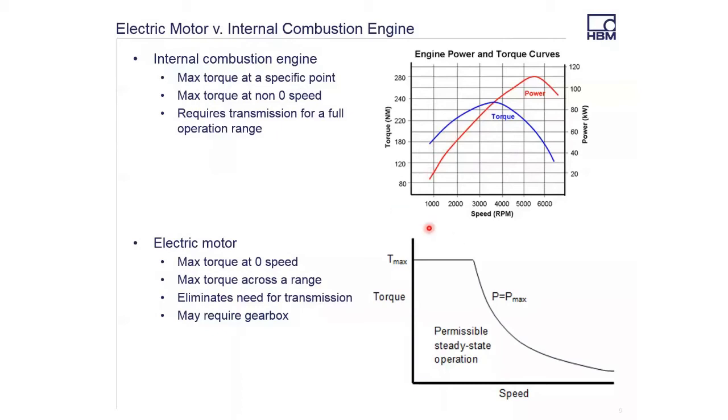Now, comparing with the electric machine, we have the same graph with speed on the x-axis and torque on the y-axis. At zero speed, the electric machine can produce maximum torque.